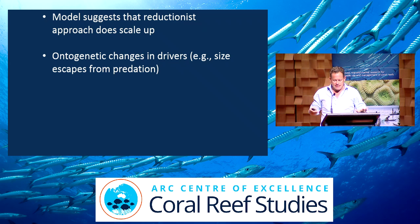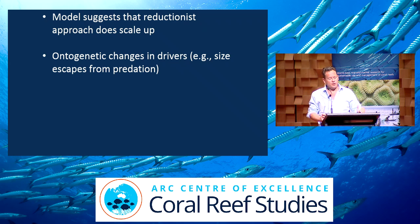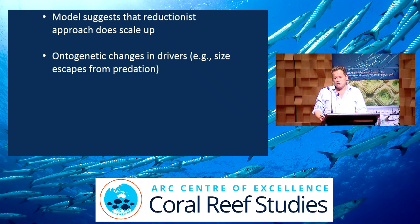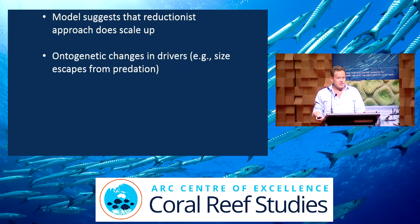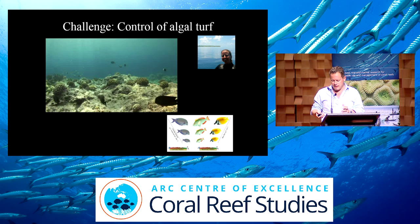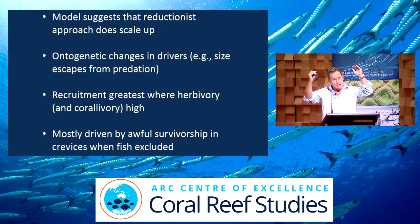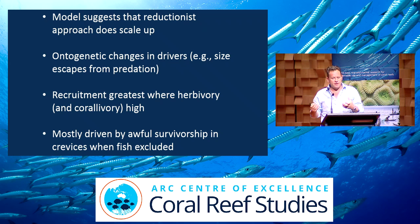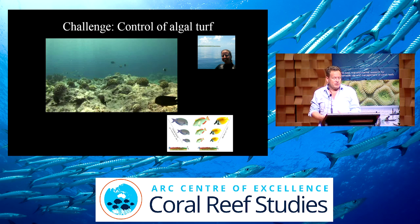We looked at the ontogenetic changes in the drivers acting upon corals as they try to recruit, and there are some very interesting patterns that emerge, including ontogenetic escapes from predation risk. We found that recruitment was greatest where herbivory and corallivory were high — that won't surprise a lot of people. And interestingly, one of the biggest bottlenecks when we manipulated herbivory was really poor survivorship of corals in crevices when herbivore access was reduced. So that was one example where the models helped us feel confident with what we were doing.